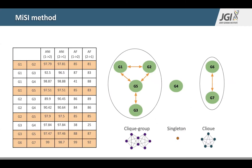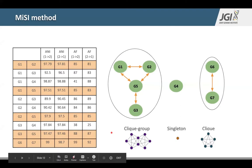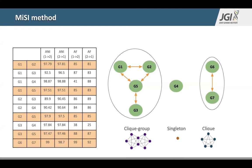A question was raised about whether ANI takes into account plasmid DNA or only chromosomal DNA. The answer is that it uses all the genes in the genome, since we can't reliably identify plasmid sequences in draft genomes. If a plasmid has been identified and is separated out, then we don't include it. So for complete genomes where plasmids are known, only chromosomal sequences are taken into account, and for draft genomes, everything is taken into account.